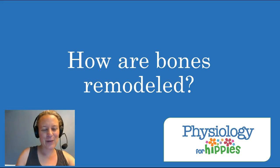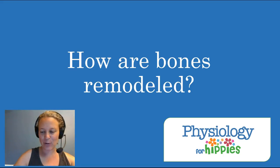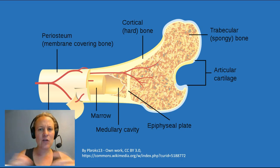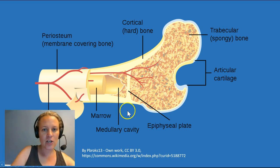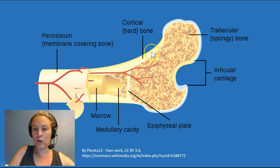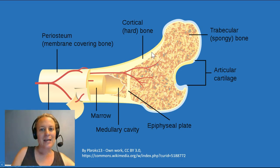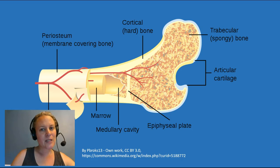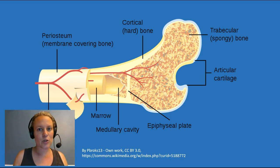Hi everyone, I got a question about how bones are remodeled, so I wanted to record the answer so we could all follow along. First we need to review some terms and some anatomy. If you've ever picked up a bone, maybe at a nature center or something like that, you were touching the cortical or compact bone. This is what most of us think about when we think about bone — this dense cortical bone. It makes up about 80% of the bone by mass, and this is where we store minerals, for example calcium, but a whole bunch of others as well.